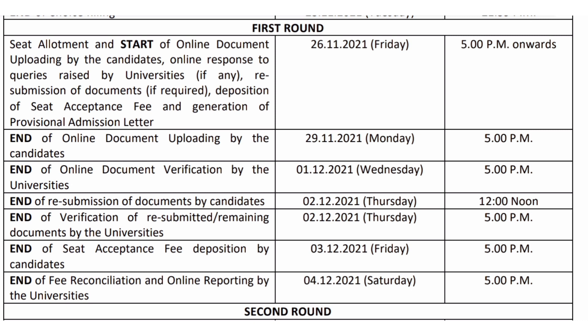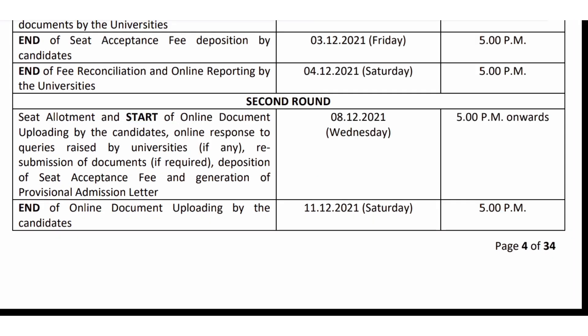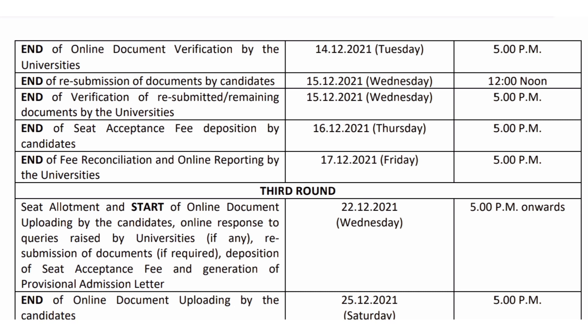After the first round, if a candidate couldn't get admission to any university, the second round of allotment follows. Seat allotment and start of online document uploading will begin from 8th of December 2021 from 5 PM onwards. The end of online document verification by the universities is 14th of December 2021 up to 5 PM.